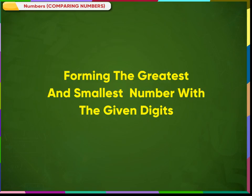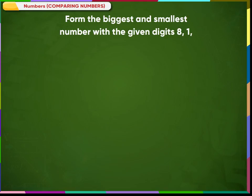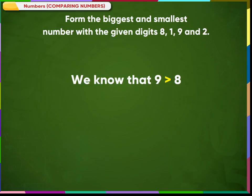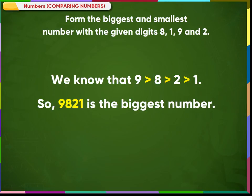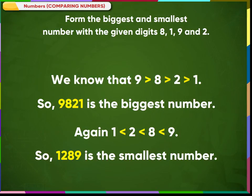Forming the greatest and smallest number with given digits. Example 1: Form the biggest and smallest number with the digits 8, 1, 9, and 2. We know that 9 is greater than 8, which is greater than 2, which is greater than 1. So, 9821 is the biggest number. Again, 1 is smaller than 2, which is smaller than 8, which is smaller than 9. So, 1289 is the smallest number.